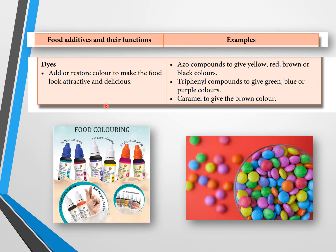Examples of dyes: azo compounds give yellow, red, brown, or black color — you must memorize this. Triphenyl compounds give green, blue, or purple color. Caramel gives brown color. These dyes are found in sweets, giving them their various colors.